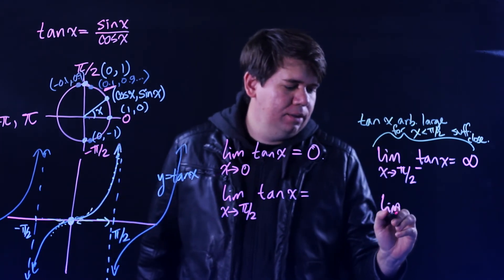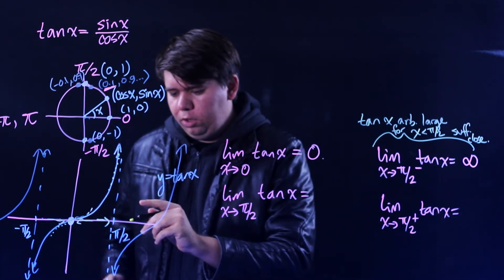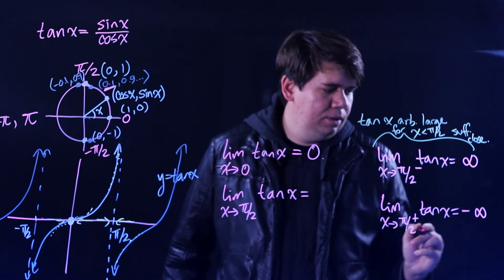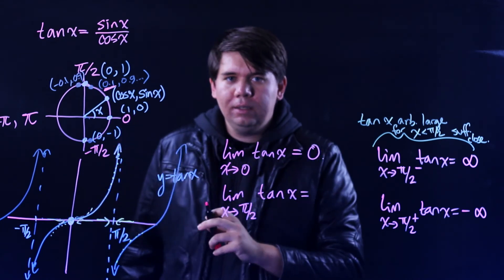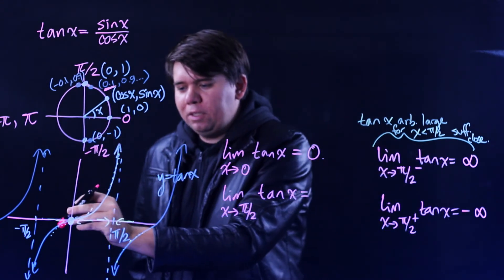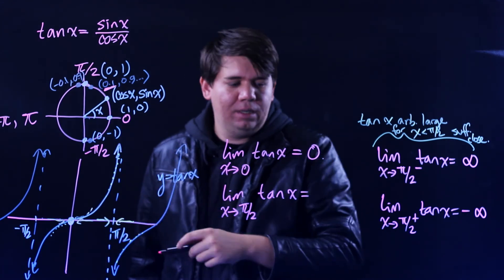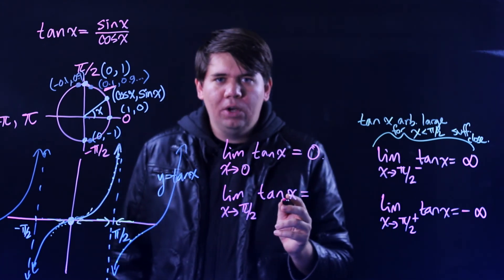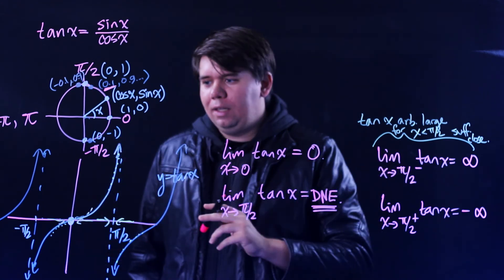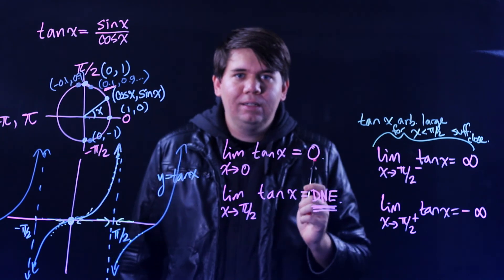From the right-hand side, as x approaches π/2 from the right, the values of tangent are getting smaller and smaller, going to negative infinity. So from the left we go up to infinity, and from the right we go down to negative infinity. It never actually reaches infinity — this is just a way of saying the values become arbitrarily large or arbitrarily large in the negative direction. Since the left-hand and right-hand limits disagree, the overall limit does not exist.